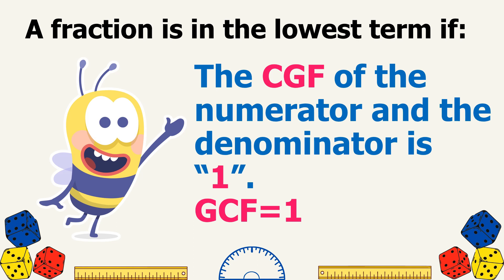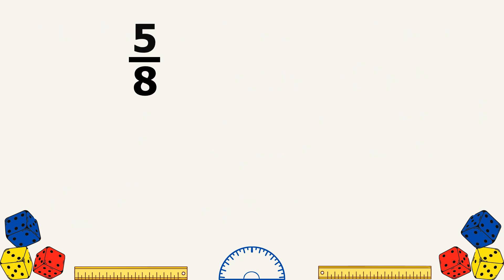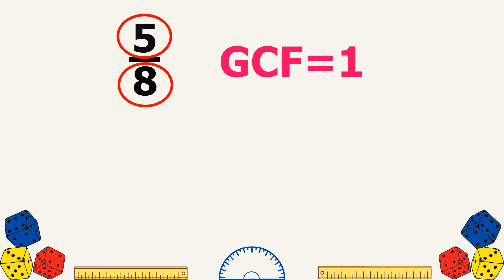How will we know that a fraction is already in the lowest term? A fraction is in the lowest term if the GCF of the numerator and the denominator is 1. Like in this example, 5 eighths is already in the lowest term because the GCF of 5 and 8 is 1. This means that there is no other common number that can divide both 5 and 8 except 1.